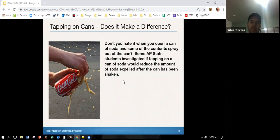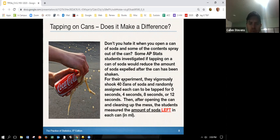Tapping cans. So here's another model. Tapping cans does make a difference. Don't you hate it when you open a can of soda and some of the content sprays all out of the can? Some AP STAT students investigated if tapping on the can of soda would reduce the amount of soda expelled after the can has been shaken. For their experiment, they vigorously shook 40 cans of soda and randomly assigned each one to be tapped for 0 seconds, 4 seconds, 8 seconds, or 12 seconds. Then after opening the can and cleaning up the mess, the students measured the amount of soda that was left in each can. You can think about kind of a fun way. What's the experimental units? What are the different treatments? So find some fun extra bonus here is to pause this and try and draw this experimental design.